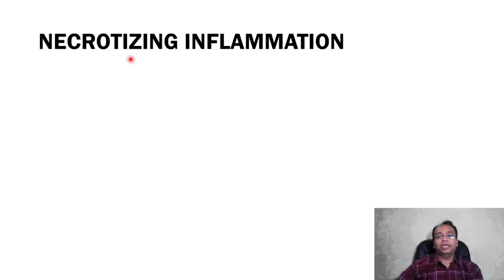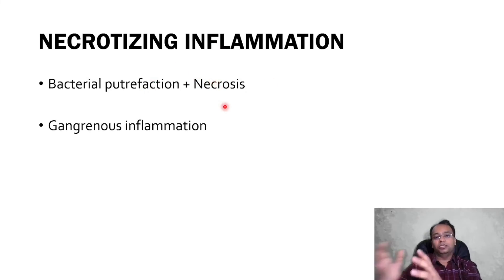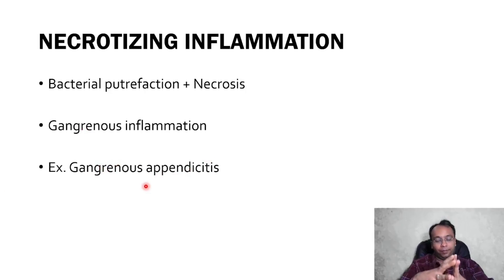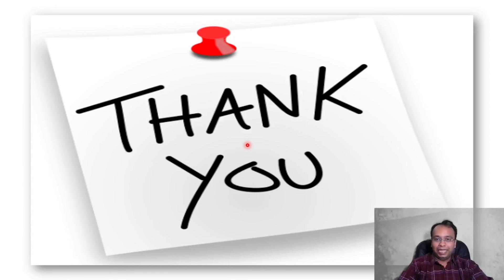The last variety of acute inflammation is necrotizing inflammation. The name itself suggests there will be necrosis. Along with bacterial putrefaction, there will be necrosis. Whenever bacterial putrefaction is present along with necrosis, the condition is known as gangrene. So here there will be gangrenous inflammation, and the most common example is gangrenous appendicitis — if appendicitis is not treated timely, gangrenous appendicitis can occur. That's all about the morphological types of acute inflammation. Hope you enjoyed this short tutorial. Thank you very much.